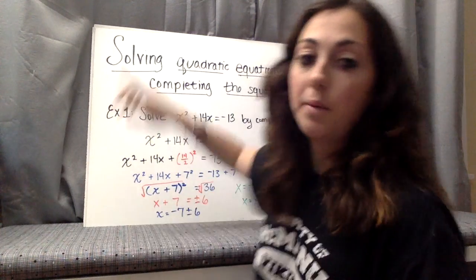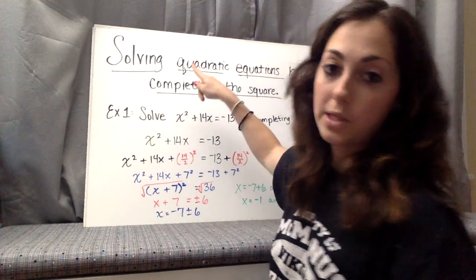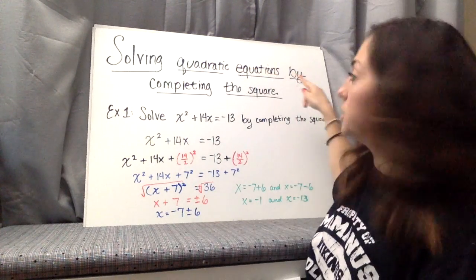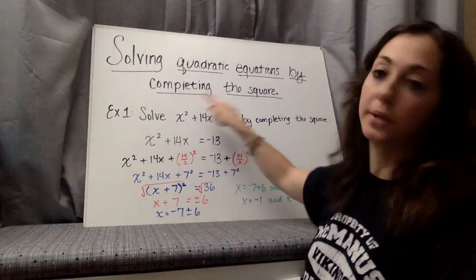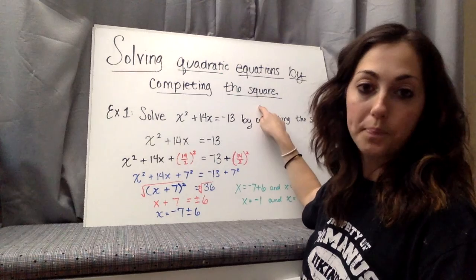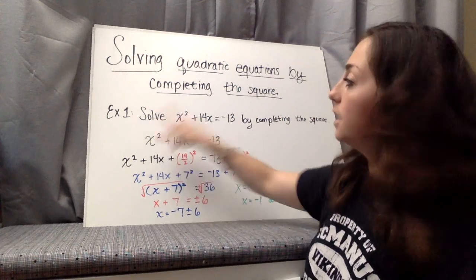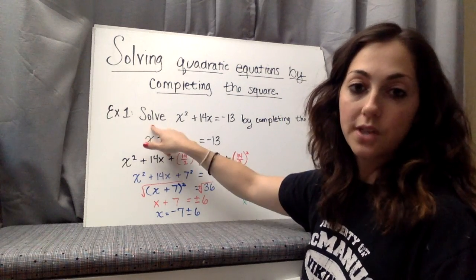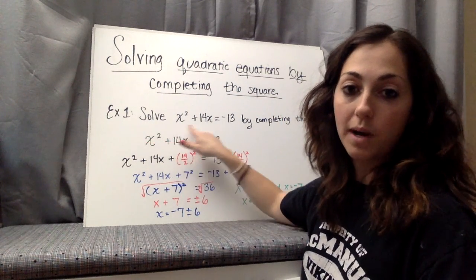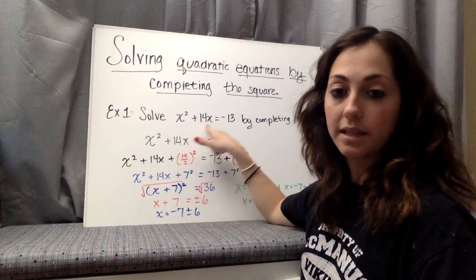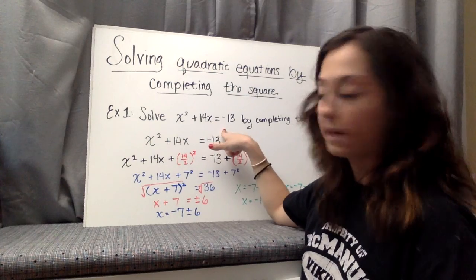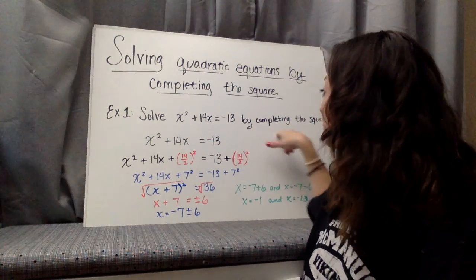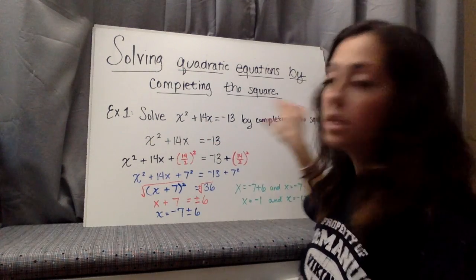Today we are solving quadratic equations by completing the square. Example 1: Solve x squared plus 14x equals negative 13 by completing the square.